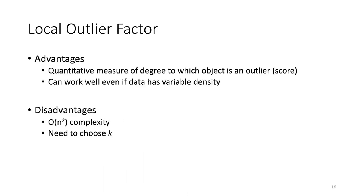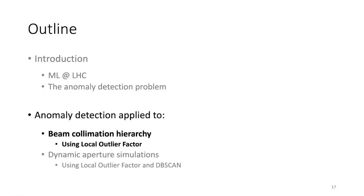The main advantage of LOF is its density awareness. It still has issues though — you need to choose k as a hyperparameter, and it's computationally expensive at O(n²). With that, let's see the LOF algorithm applied to detecting issues with the beam collimation hierarchy.